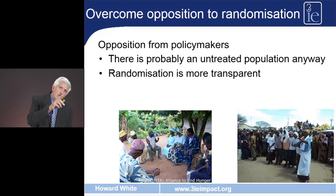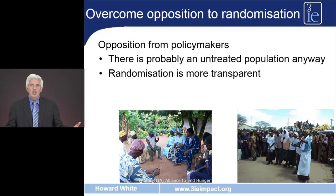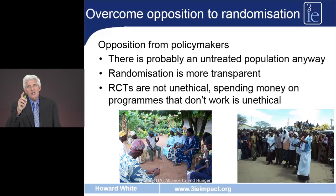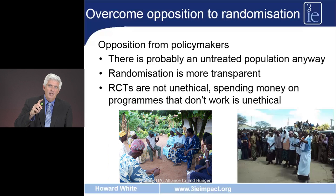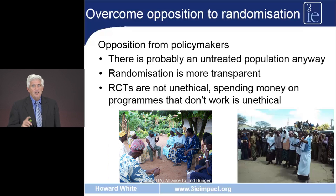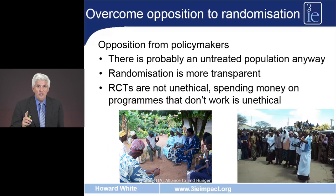Secondly, randomisation is more transparent when it comes to allocating programme resources. If we do it by random assignment, then we know why certain communities or households are getting the intervention and others aren't, rather than there being accusations of nepotism or favouritism. And finally, it's not doing a randomised controlled trial that's unethical — it's spending development resources on programmes that may not work. Unless we do impact evaluations such as randomised controlled trials, we don't know if those programmes work or not. So doing randomised controlled trials is the ethical choice. It's not doing them which is unethical.